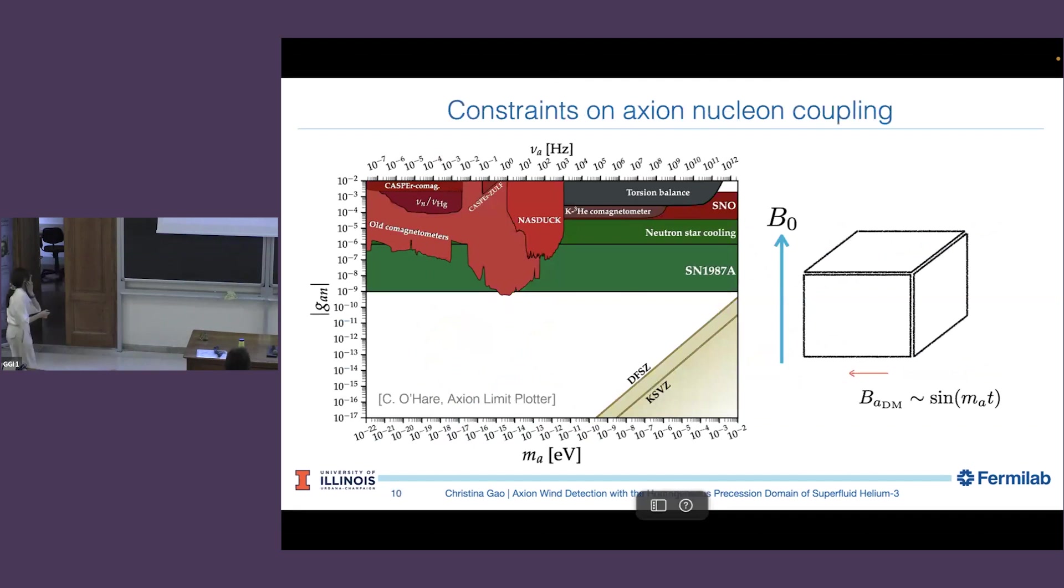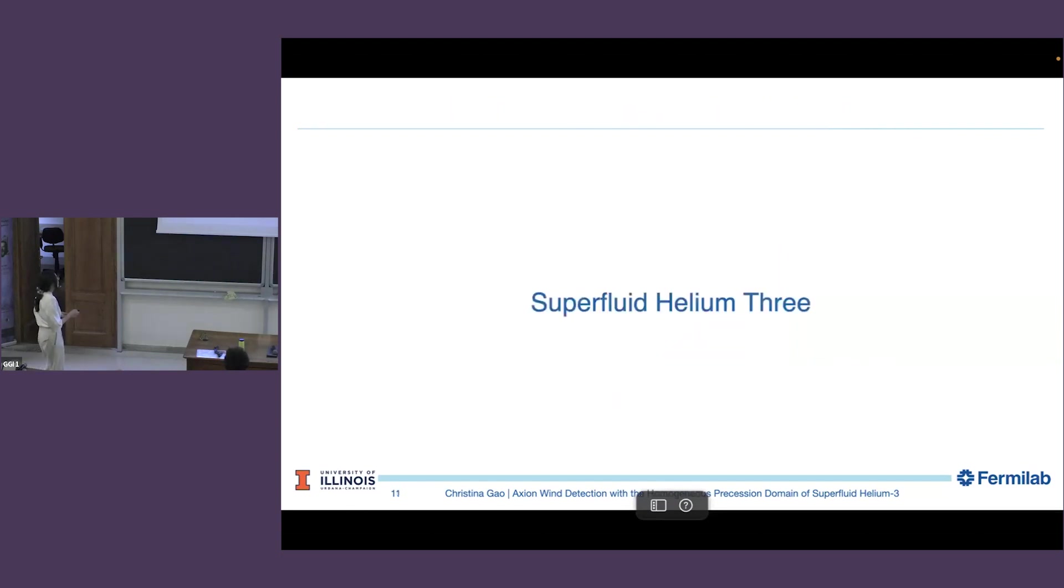To motivate axion search using NMR, relying on this coupling, there are already lots of experiments going on in this plane, and there are lots of star cooling. The strongest bounds actually still coming from star cooling in the axion-nucleon coupling. Today we're going to roughly focus here at 10 to the minus 8 to 10 to the minus 7 eV range. This is basically determined by the Larmor frequency of the helium-3 we're going to use.